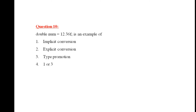Question 10: double num = 12.36f. The suffix 'f' means it is a float value, and you are storing it in a double data type. This is an example of implicit conversion or type promotion. The right answer is number 4: it can be called either implicit conversion or type promotion.